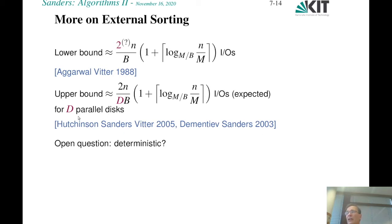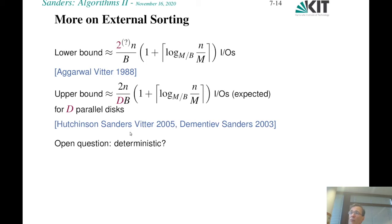One can also look at a generalization of the external memory model with an additional parameter D for the number of disks operated in parallel. In one IO step, we can access D blocks at once, one block from each disk. One would like to have D in the denominator so everything gets a factor of D faster. It turned out to be surprisingly difficult to achieve this. A randomized algorithm does achieve this in expectation. Getting a deterministic parallel disk sorting algorithm within even a factor of 2 remains an open problem.